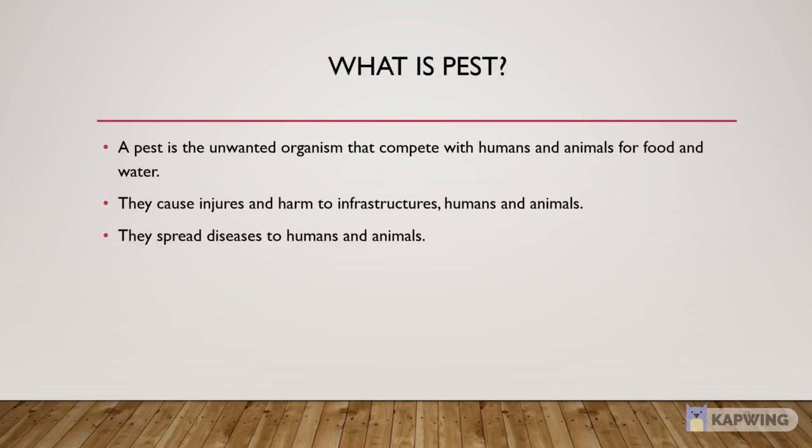First of all, we will define the pest. A pest is an unwanted organism that competes with humans and animals for food and water. Not only that, but there is a chance they can affect your health as well. For example, they can spread disease by stinging or biting. Others can spread disease-causing bacteria through your house.